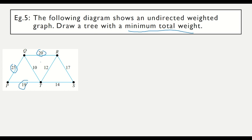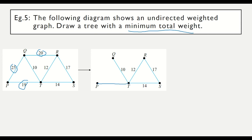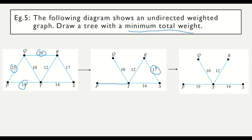If we cancel those three edges it looks correct, but we cannot cancel the edge joining PT because that vertex would become disconnected. So we take back that edge and instead look at the remaining weights — 12, 14, and 17. Since 17 is the highest, we cancel that edge instead. All vertices are now connected with exactly four edges. The minimum total weight is 10 + 12 + 14 + 19 = 55.